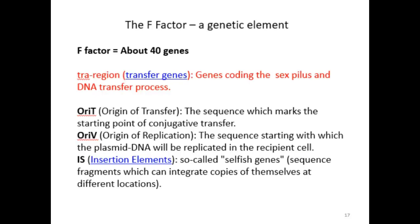A little more about the F-factor: it is a genetic element called an epizome and contains about 40 genes. The key genes to remember are the tra genes, which stand for transfer genes. These are the genes that encode the sex pilus and also allow the DNA transfer process to occur from donor to recipient cell. Other genes and sequences on the F-factor exist but are beyond the scope of this course.